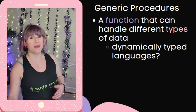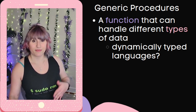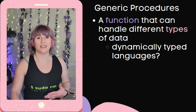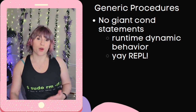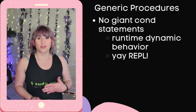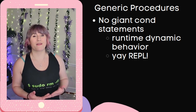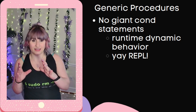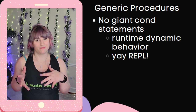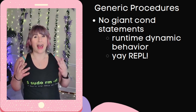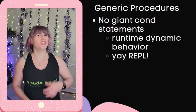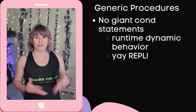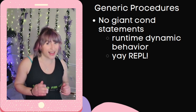A generic procedure is a function that can handle many different types of data - and you may have heard me say 'types.' How does this work in a dynamically typed language like Clojure, Python, or Ruby? To quote the OG SICP, we introduce data-directed programming as a technique to allow individual data representations to be designed in isolation and then combined additively - i.e., without modification. The important thing to note here is the word 'additively.' So instead of a giant cond statement, we favor runtime dynamic behavior and get the advantages of extensibility at runtime, aka in your REPL.